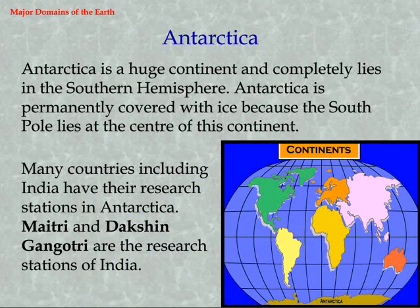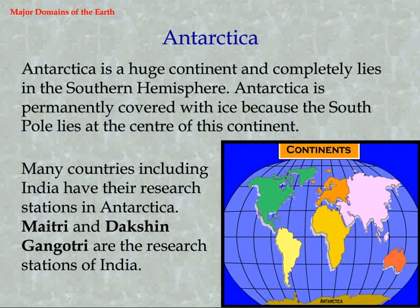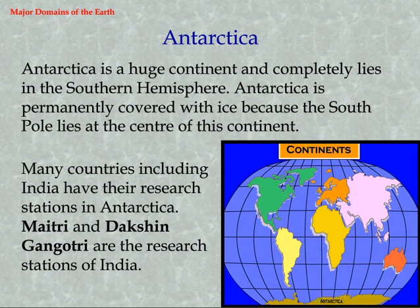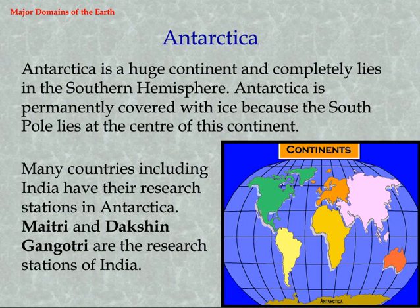Antarctica is a huge continent and completely lies in the Southern Hemisphere. Antarctica is permanently covered with ice because the South Pole lies at the center of this continent. Many countries including India have their research stations in Antarctica. Maitree and Dakshin Gangotri are the research stations of India.